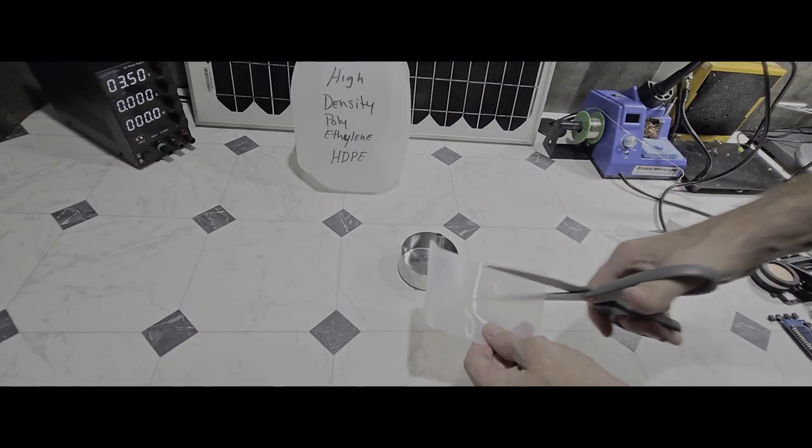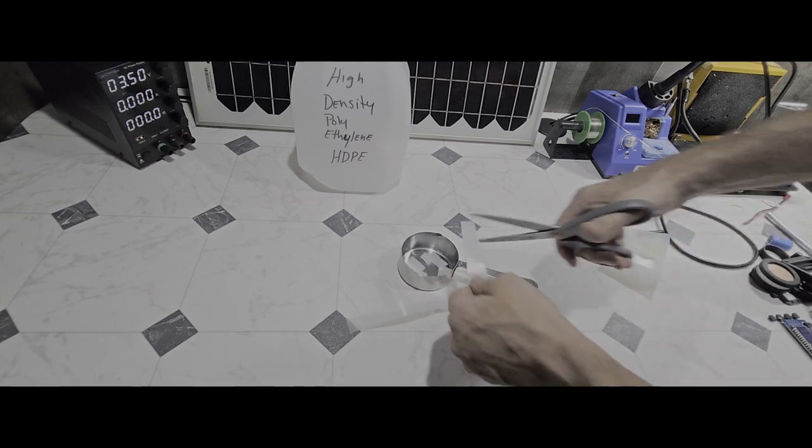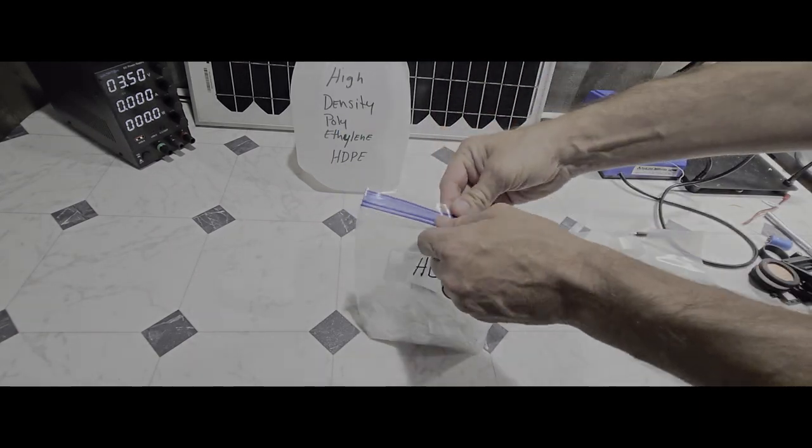Scissors make quick work of cutting and prepping the HDPE for the melting stage, turning those jugs into manageable pieces ready for processing.